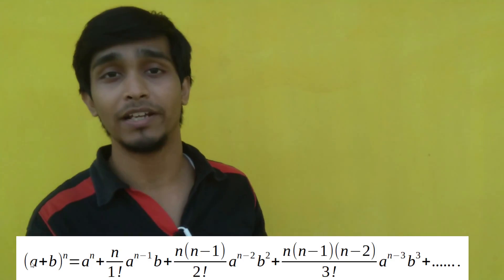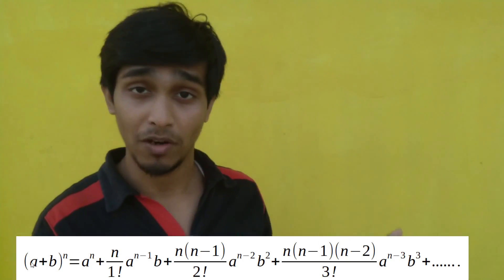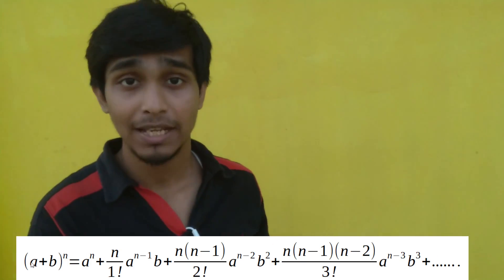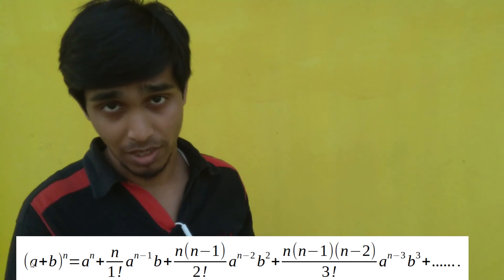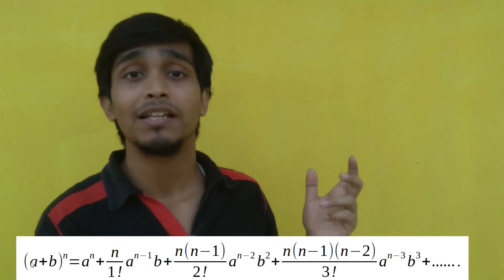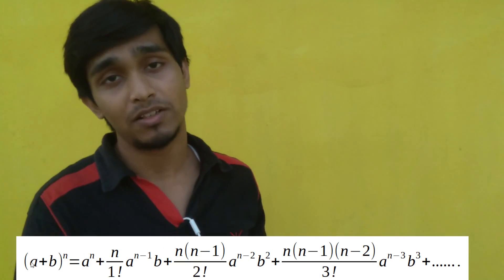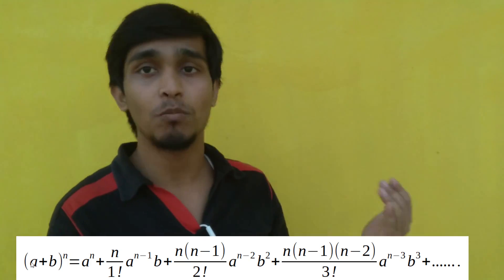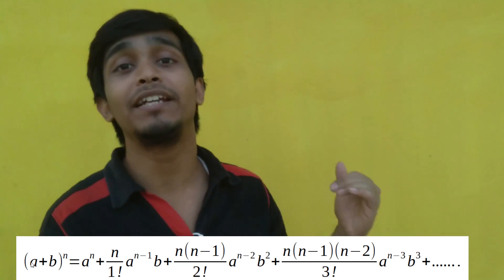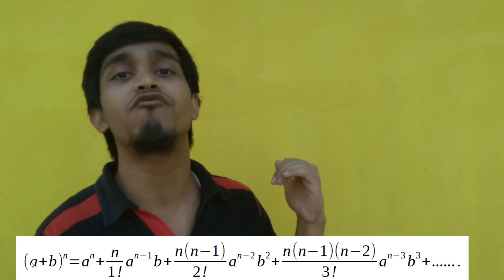But what if n is not a positive integer? Then comes the Extended Binomial Expansion Theorem, which says (a + b)^n equals a^n plus n·a^(n-1)·b plus [n(n-1)/2!]·a^(n-2)·b² plus [n(n-1)(n-2)/3!]·a^(n-3)·b³, and it goes up to infinite terms.